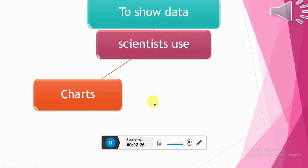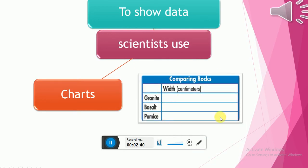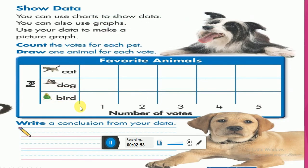Look here. To show data, scientists use what? They use charts. Charts are tables I use to record data. This chart keeps data organized. If we look at the book page 175, we can find data and show data.